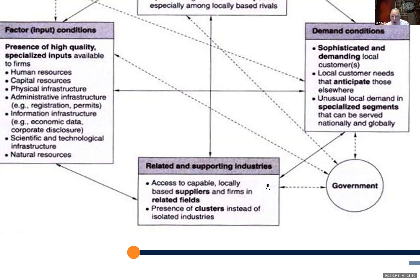Related and supporting industries are those that exist to support a particular product or service. In the movie industry, for example, this includes cameras, people with specialized know-how, set design, costume design, and the ability to edit film. Think of Silicon Valley and all the ancillary suppliers working together to build that ecosystem.